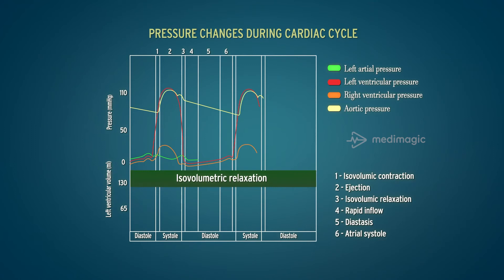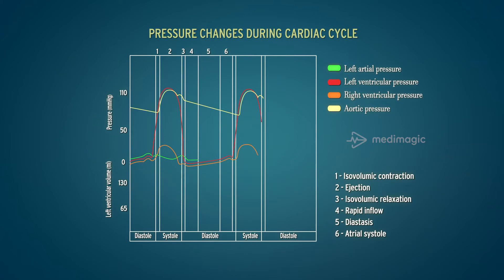During isovolumetric relaxation, the AV valves and the semilunar valves are closed. There is a rapid fall in the intraventricular pressure, reaching about 2-3 mmHg in the left ventricle. As the intraventricular pressure falls below the pressure in the atria, the AV valves open, followed by rapid filling.